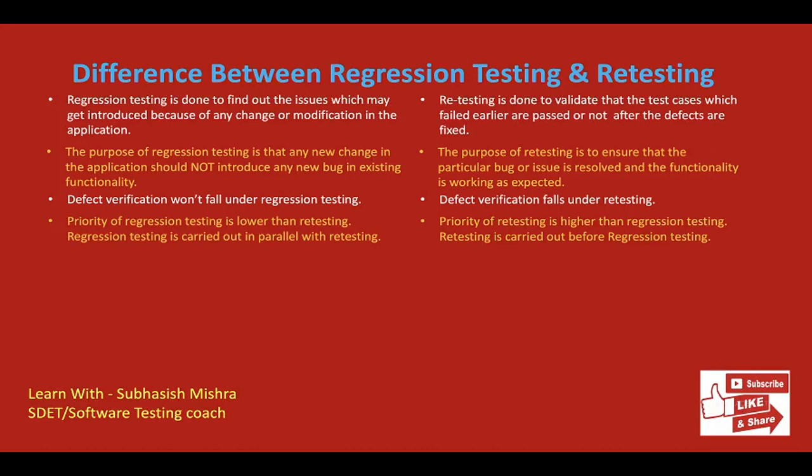Priority of regression testing is lower than retesting. Regression testing is carried out in parallel with retesting. Priority of retesting is higher than regression testing, and retesting is carried out before regression testing. We always know the priority of retesting is high because when you are retesting a defect there may be a chance the test case will fail again — maybe that defect is not fixed properly. So again you need to hand it over to the developer, reopen the defect, and hand it over. It may take more time. That's why we always try to first test the defect which is fixed — that's why retesting is done first.